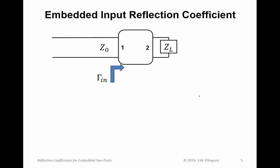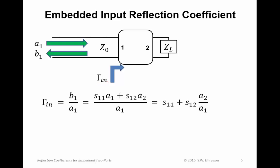Now we're ready to derive the input reflection coefficient at the input of the two-port, which we're calling gamma in. We write down the power waves: A1 flowing into the input, B1 flowing out of the input. So that reflection coefficient equals the ratio B1 over A1. Using S-parameter concepts, B1 by definition is S11·A1 plus S12·A2. With a little algebra, the input reflection coefficient equals S11 plus S12 times the ratio A2 over A1.